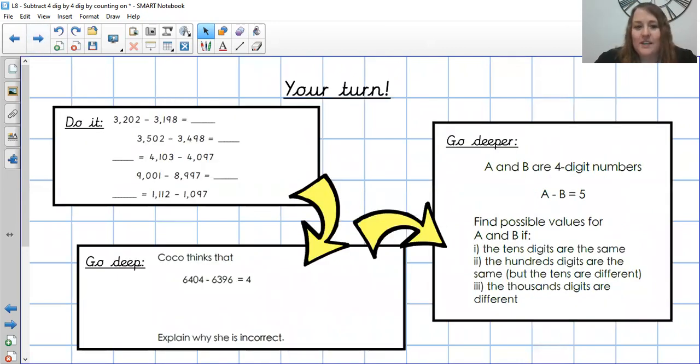Your turn today then. Your do it challenge, you have five more questions. Hopefully all of those, just checking now, all of yours are close enough together that they will work for that technique. You then have a go deep challenge where Coco has made a mistake. Can you explain why and what she's done? And then you'll go deeper.